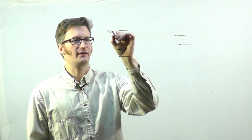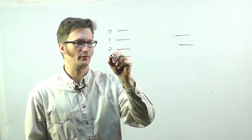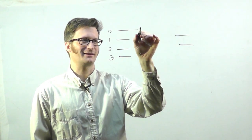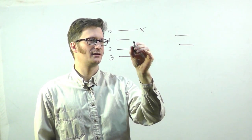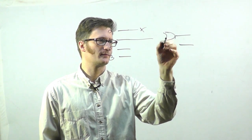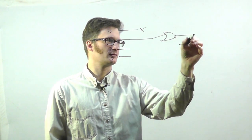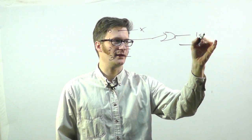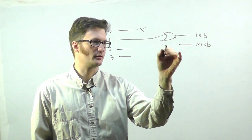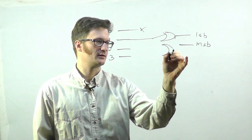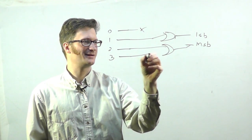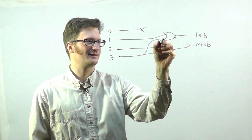So the inputs are labeled 0, 1, 2, and 3. Input 0 isn't connected to anything. Input 1 goes to an OR gate for the least significant bit output. Input 2 goes to an OR gate for the most significant bit output. And input 3 goes to both OR gates.